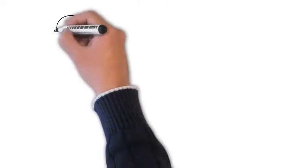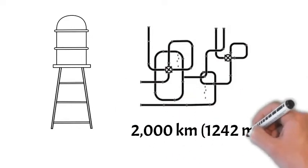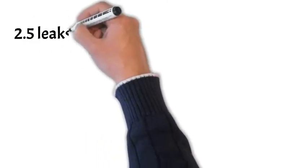As an example, we'll consider a water distribution utility with a network of 2,000 kilometers divided into 60 DMAs. For the network size in our example,